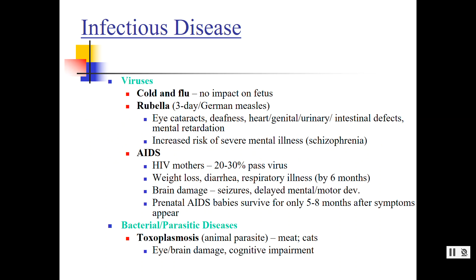Maternal disease is another teratogen factor. A cold or flu typically has no impact, but we're seeing now that coronavirus does have an impact, requiring close work with a doctor. Rubella — prevented by the MMR vaccination for measles, mumps, and rubella — has many severe outcomes. AIDS is many times passed to babies and must be medically supervised. HIV-positive mothers have a 20 to 30 percent chance of passing the virus, and many prenatal babies with AIDS cannot survive very long past their birth.